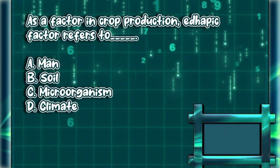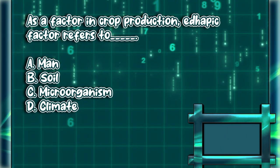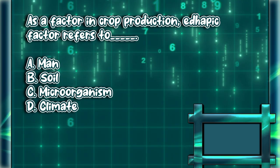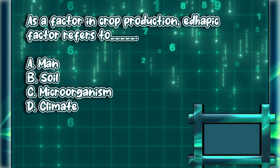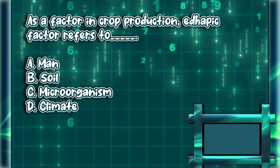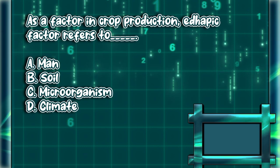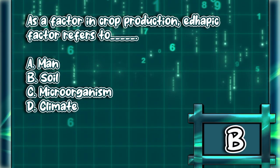As a factor in crop production, an edaphic factor refers to: A. Man. B. Soil. C. Microorganism. D. Climate. The answer is letter B.